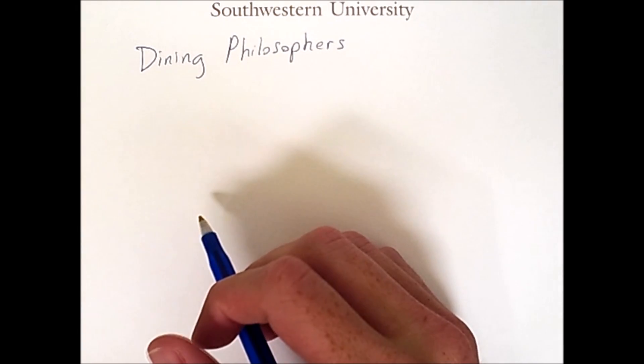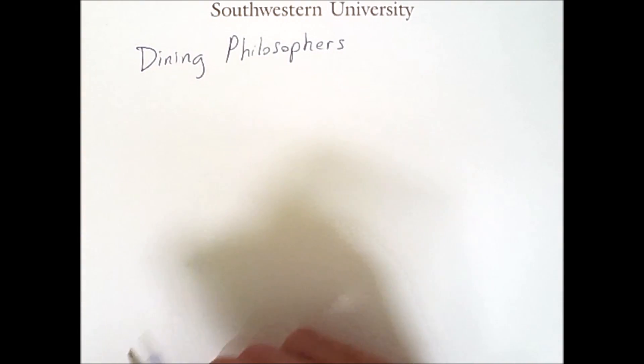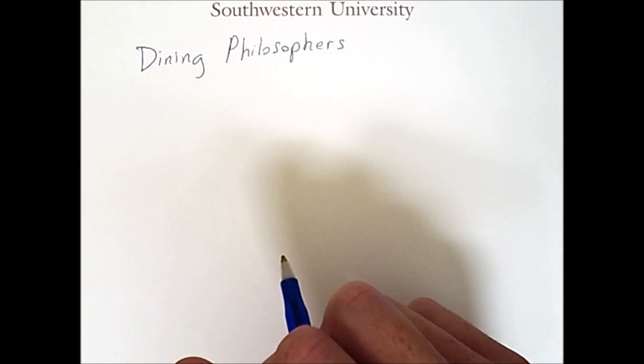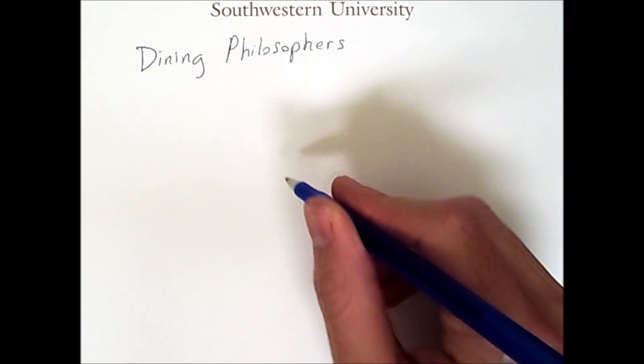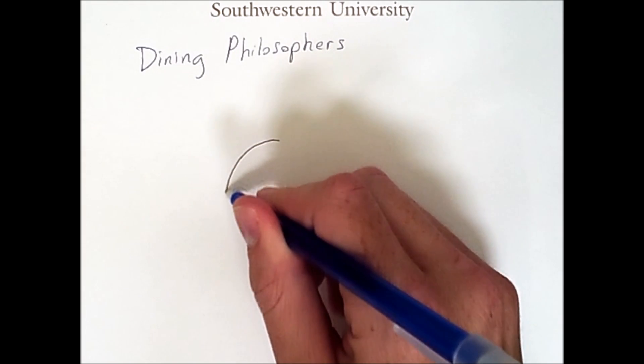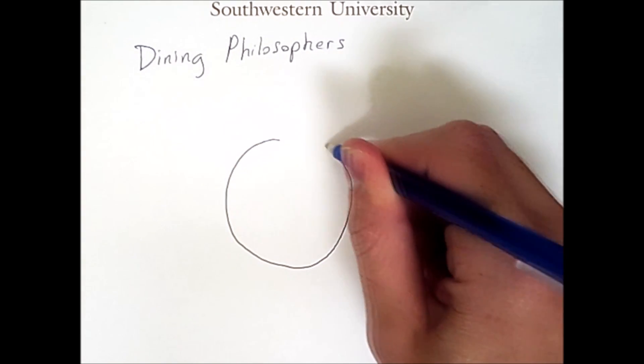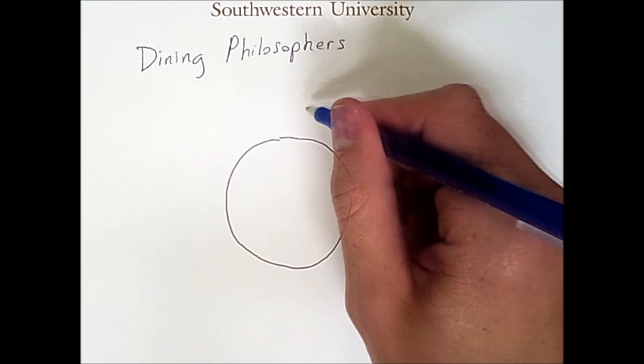This video is about a classic problem in computer science known as the dining philosopher's problem. It's a fun little problem that teaches about the concepts of deadlock and starvation, quite literally, because we have a table with five philosophers seated around it.